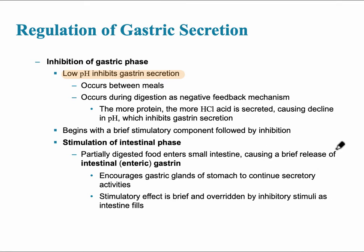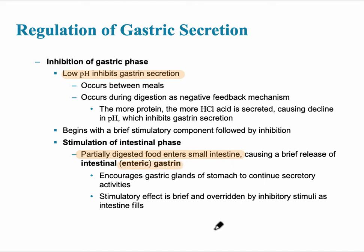The intestinal phase begins with a brief stimulatory effect followed by inhibition. The stimulatory component is partially digested food entering into the small intestine, which causes a brief release of gastrin — but it's gastrin released in the small intestine from the enteroendocrine cells there.